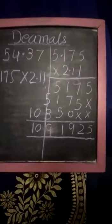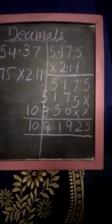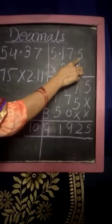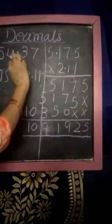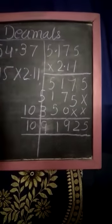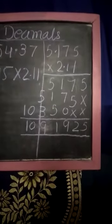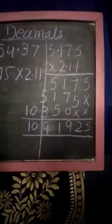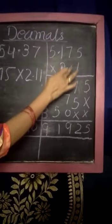We have to place the decimal. Now here is the decimal. After 3 digits: 1, 2, and 3. And there is after 2 digits. So we have to put the decimal here 3 and here 2.